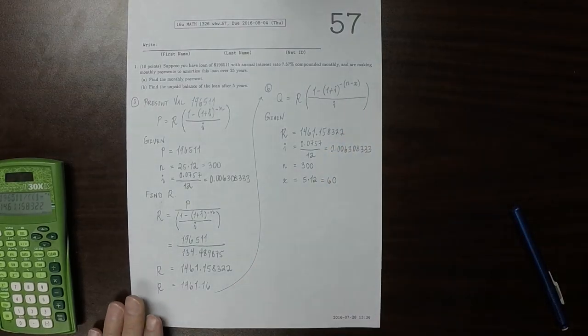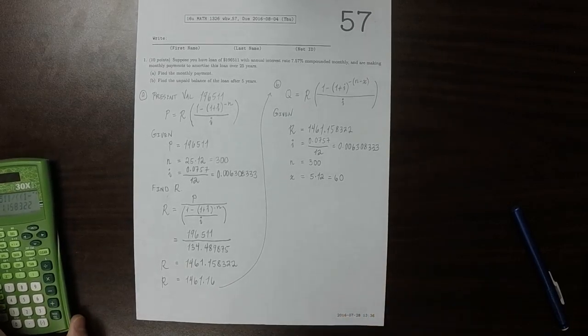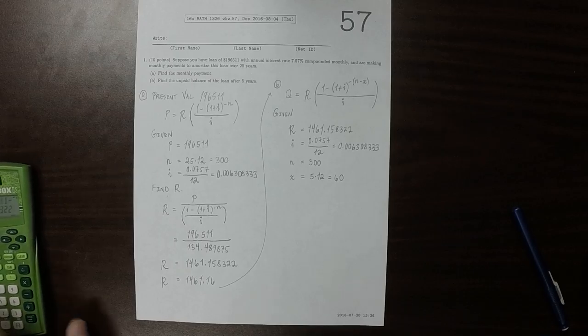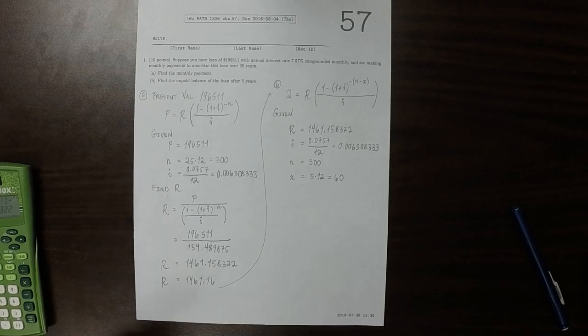Part B is asking: You're amortizing this loan over 300 payments. You've made 60 of them. What is the unpaid balance? Essentially, what is the present value of the loan after 60 such payments?